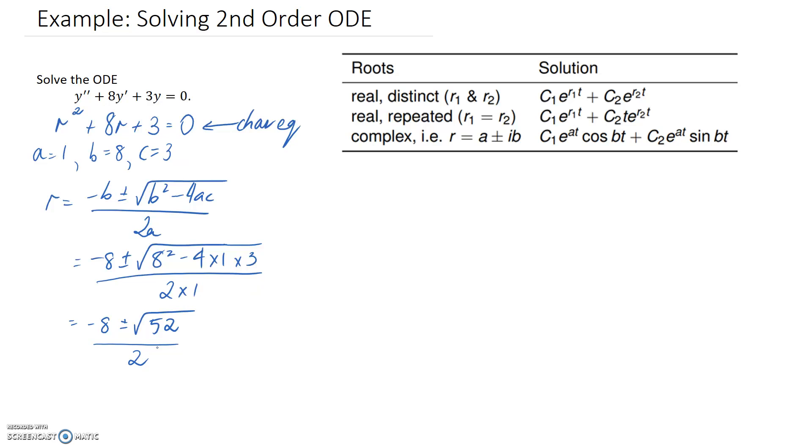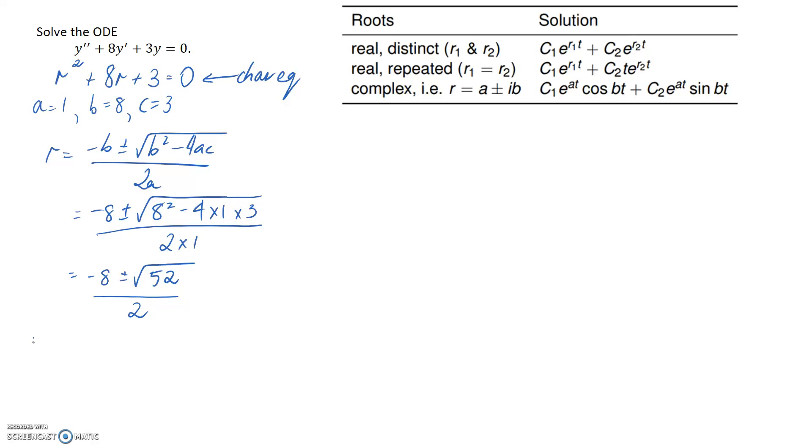So we're going to end up with two solutions to our ODE falling out. So the first one which I'll call r₁ will take the positive sign, and if you type this into the calculator to simplify it, it comes to about -0.394. So our second solution is going to come from taking the negative sign, and again if we type this into a calculator to simplify it, it comes out to -7.601 approximately.